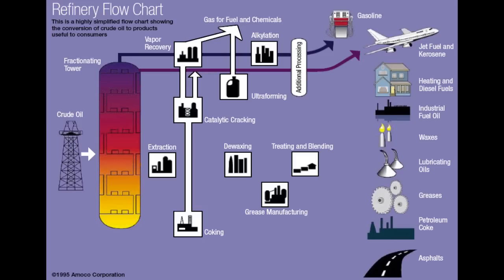We should note that catalytic cracking can also produce jet fuel, as you can see the arrow from cat cracking touching the jet fuel line. Catalytic cracking also produces feedstocks for the alkylation unit to produce additional high-octane gasoline.